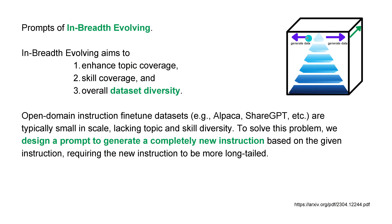Now we need to adapt additional domain knowledge - this is the breadth evolving, shown by the green arrow. We enhance the topic coverage, the skill coverage, and overall dataset diversity. We ask GPT-4 to design a prompt to generate a completely new instruction based on a given instruction, requiring the new instruction to be more long-tailed.